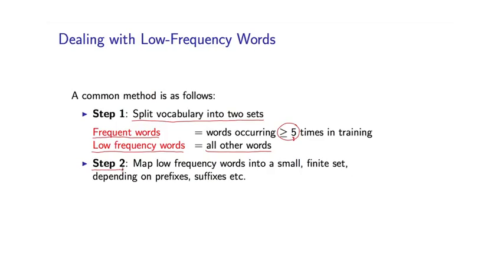And the second step, we're going to define a mapping where we map low-frequency words, so all the words in this set, into a small finite set typically depending on spelling features of those words. I'll give an example of this in the next slide. But the basic idea is to take this very large set of low-frequency words. There might be many, many words that fall into this class. And for each word, just map it into one of, say, 10 or 20 new words, this small finite set.